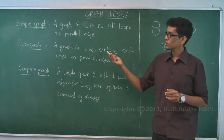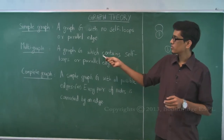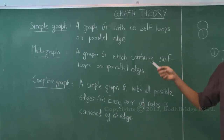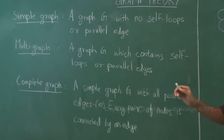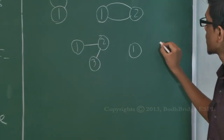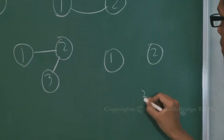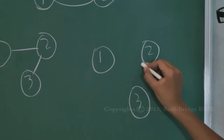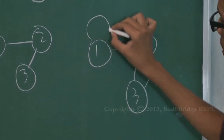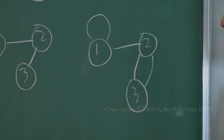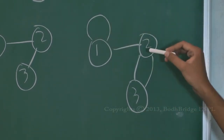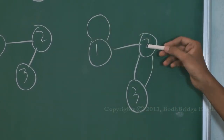A multi-graph is the opposite of a simple graph — it is a graph G which contains self-loops or parallel edges. An example of a multi-graph has a self-loop from vertex 1 to itself and parallel edges between vertices 2 and 3.